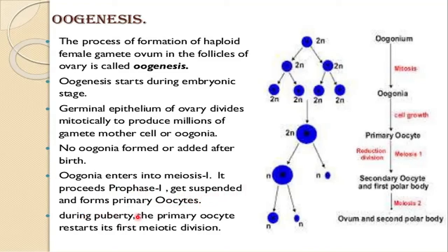During puberty, the primary oocyte restarts its first meiotic division. As you can see in the figure, first is the oogonium, which forms oogonia, and then after cell growth they form the primary oocyte, then the secondary oocyte and first polar body, and from this the ovum and second polar body form. That's all for now.